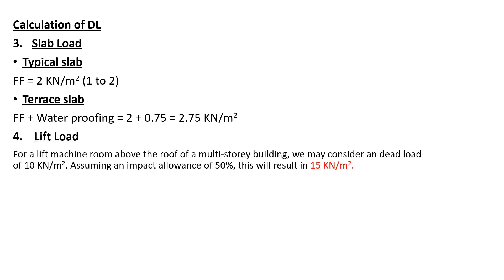Coming to the lift load. Generally, the load of the lift will be provided by the lift company. However, in the absence of data, you can consider a dead load value of 10 kN per meter square. This load of 10 kN per meter square will be applied to our lift cabin slab. Since the lift is moving to and fro in the building, it also creates an impact load. We will assume an impact allowance of 50%, so our total value of lift load will be 10 multiplied by 1.5, which is nothing but 50% impact load, resulting in 15 kN per meter square.